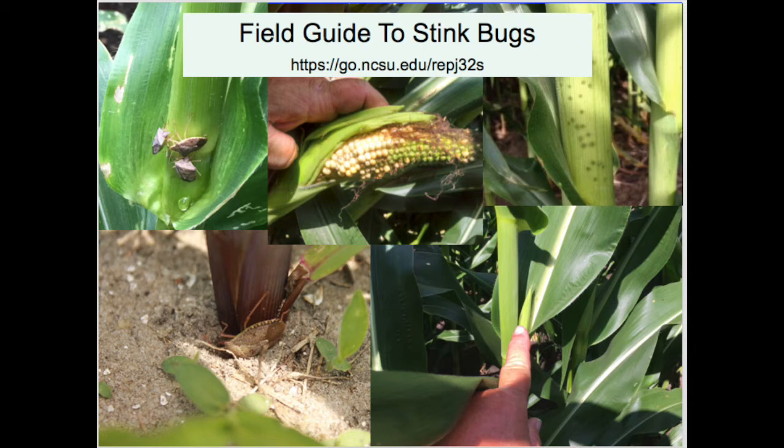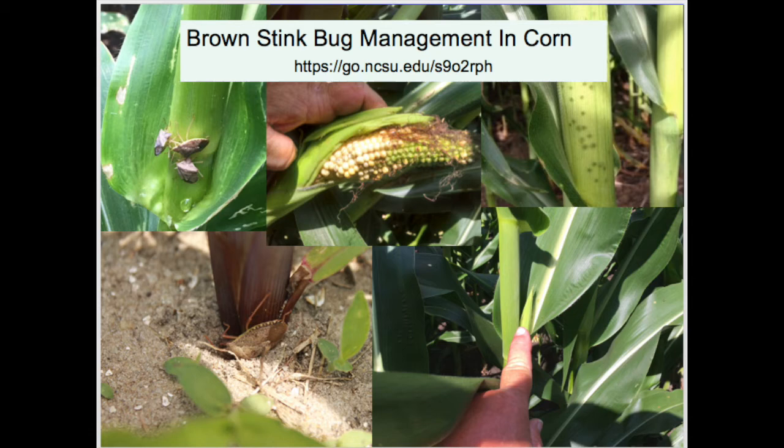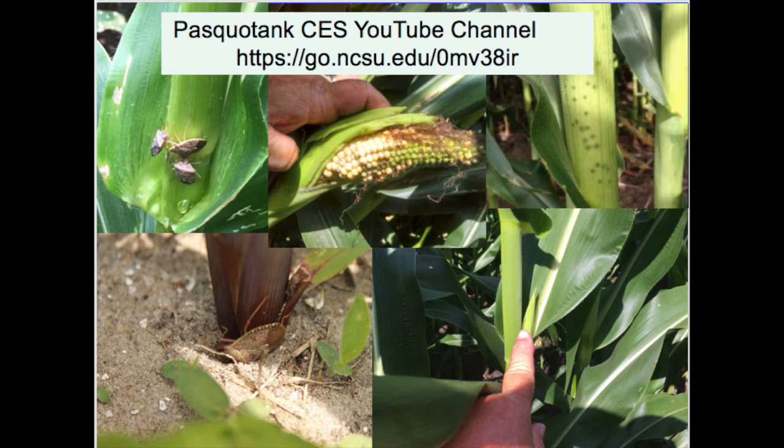There is a wealth of information out there about stink bugs, and a very good publication is the 'Field Guide to Stink Bugs.' The link shown here will provide you with information on how to obtain a copy. Dr. Dominic has recently published a revised version of the fact sheet 'Brown Stink Bug Management in Corn.' All of the information in this video about insecticides and pesticide application factors were taken from it, and on the screen is a link to that publication.